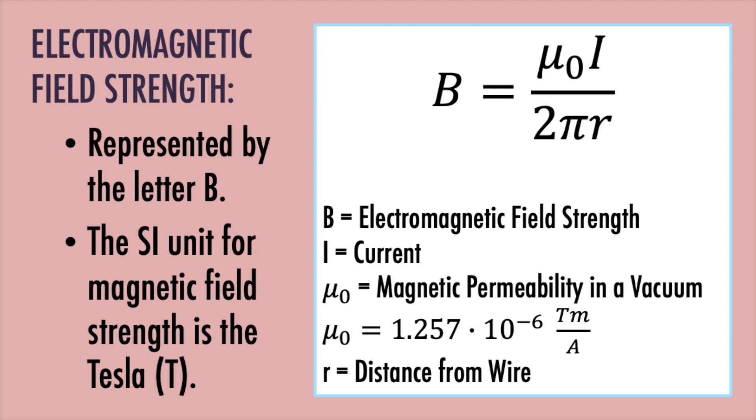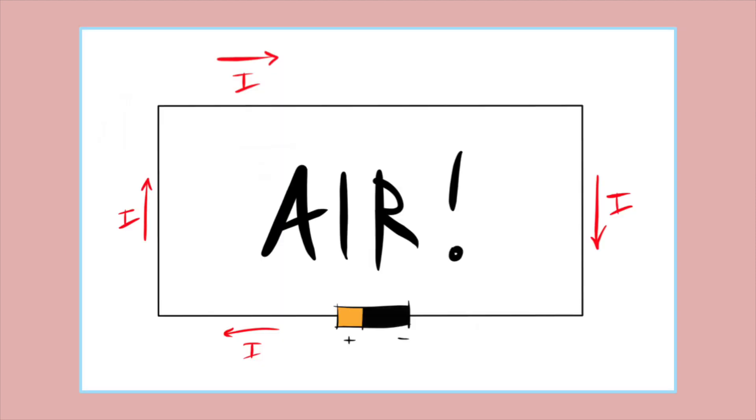You may also notice that the strength depends directly on something called magnetic permeability. Now what does that mean? Well, magnetic permeability is a characteristic of the substance through which an electromagnetic field travels. In my example, we can assume that the substance surrounding my wire is air, which has a magnetic permeability very close to a vacuum.